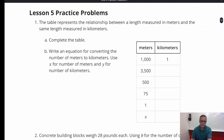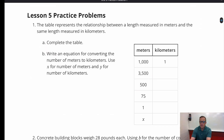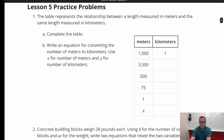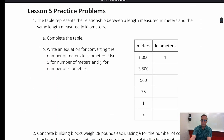Starting here with the Lesson 5 practice problems. Number 1 has a table representing the relationship between a length measured in meters and the same length measured in kilometers. We need to complete this table, and part B says to write an equation for converting the number of meters to kilometers, using x for the number of meters and y for the number of kilometers. This will be good practice for setting up an equation.